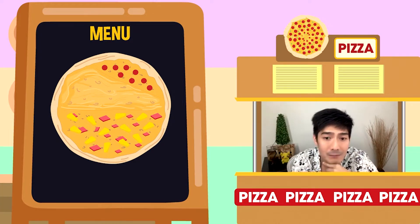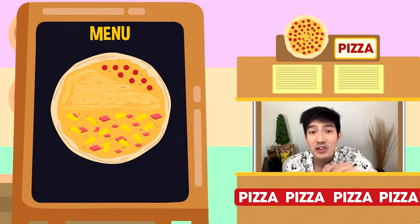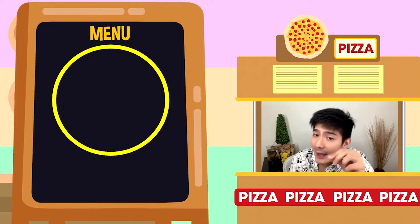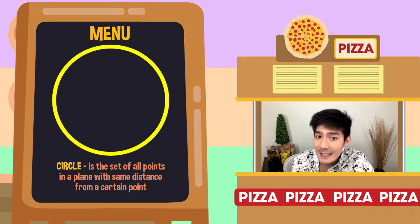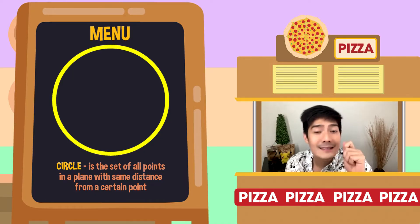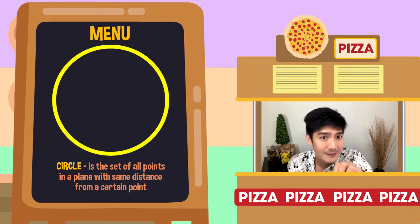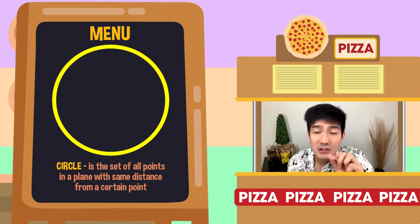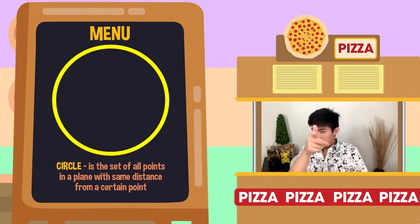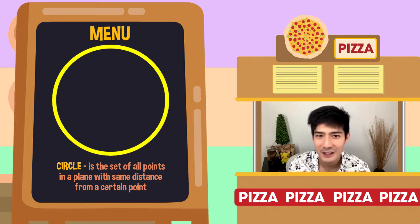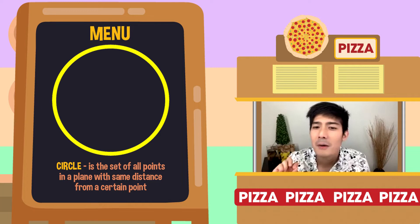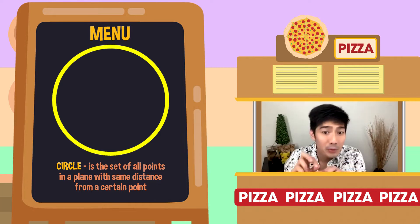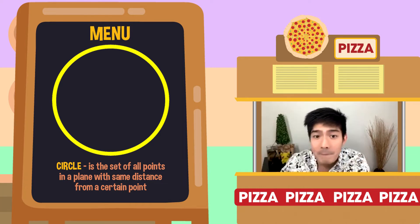Ano nga ba ang circle? Maliban sa ito ay isang round-shaped figure na walang corners at edges, circle is the set of all points in a plane with the same distance from a certain point. At ang certain point na ito ay ang center of the circle. Bull's eye. Tandaan nyo palagi — yung pinakagitna. Ibig sabihin, from the center of the circle papunta sa boundary, pare-parehas yung distance nito.